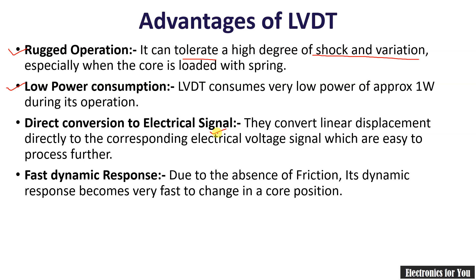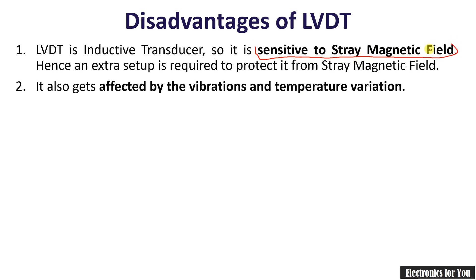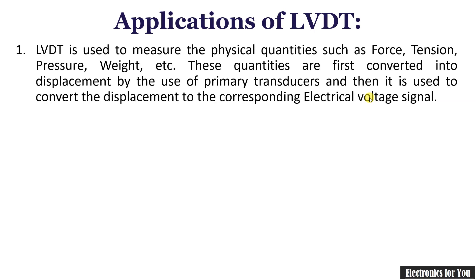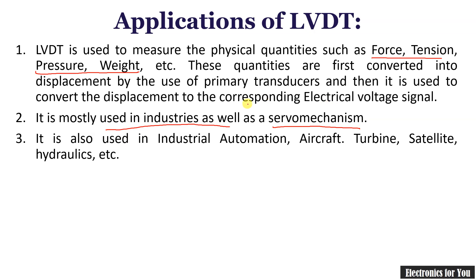The disadvantages of LVDT are: as an inductive transducer it is sensitive to stray magnetic fields, and it is affected by vibration and temperature variation. As for applications, LVDT is used for force, tension, pressure, and weight measurement when used as a secondary transducer. It is also used in industrial applications, servo mechanisms, industrial automation, aircraft, turbines, satellites, and hydraulics.